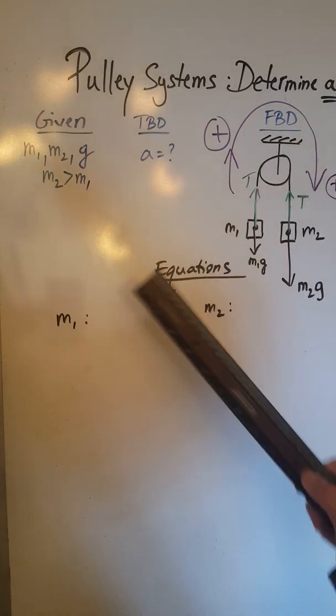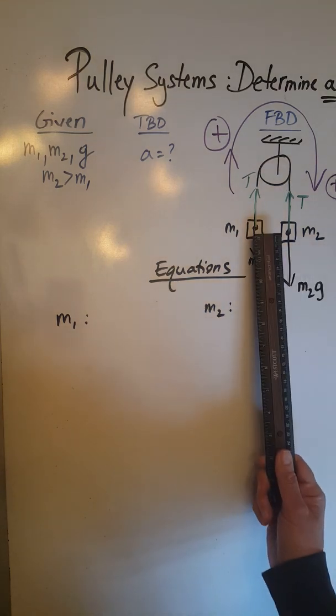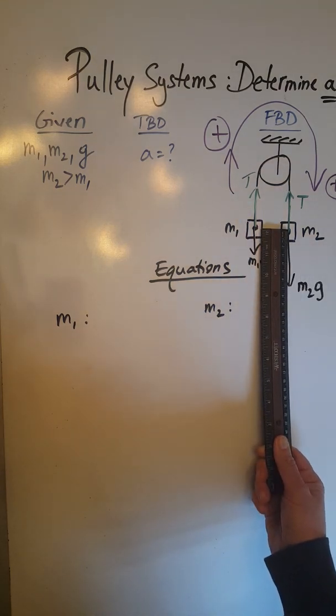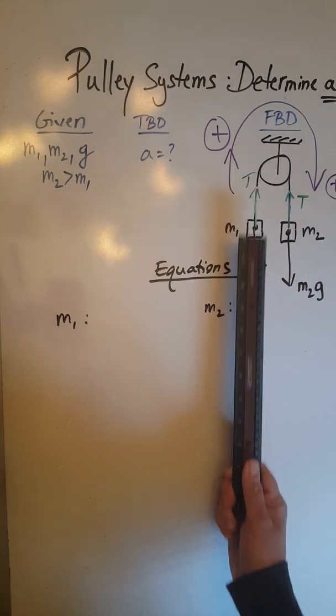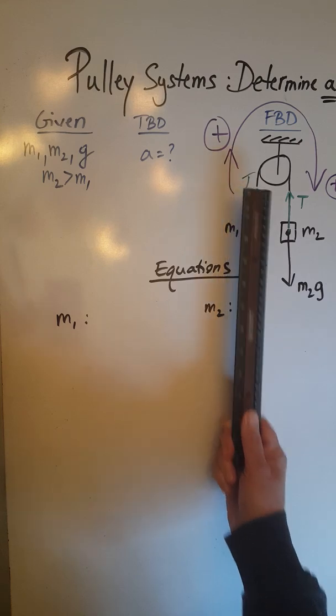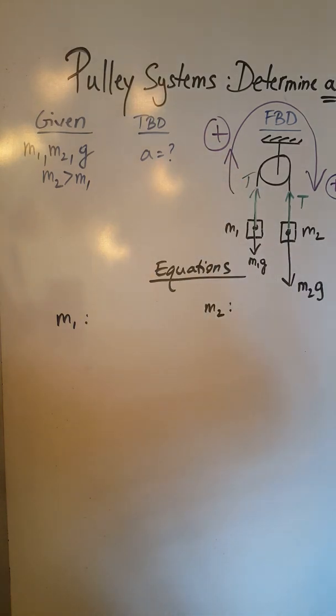Then the forces on both M2 and M1 must be unbalanced because this whole system accelerates, so therefore M2G here should be greater than T. M2G is seven, seven is greater than five, so I'm good. T here should be greater than M1G, and M1G is only three when compared to five, we are also good there.